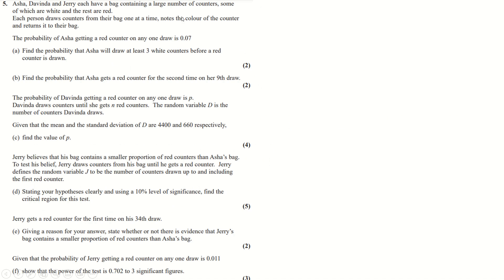Question five: Asha has a large bag of counters where P(red) = 0.07, so P(white) = 0.93. The probability of drawing at least 3 whites before getting a red is simply 0.93³, since we just need three whites in a row first.